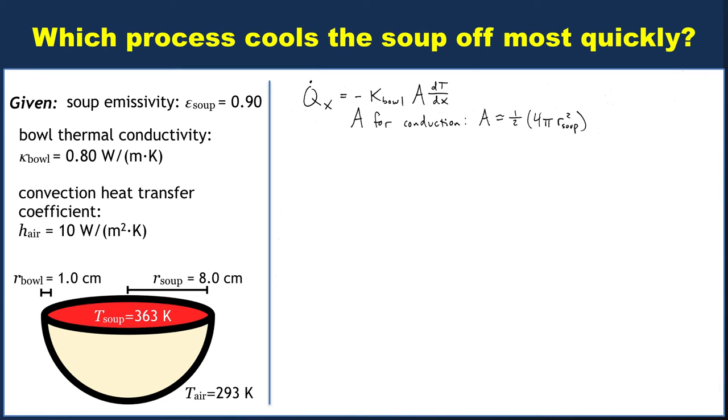If you wait long enough, certainly you can imagine that dT/dx will change. If the soup ends up heating up the bowl to the soup temperature, suddenly conduction goes away completely. But for now I'm assuming it's just been in long enough to heat up the very inner part of the bowl and not the outer part at all.